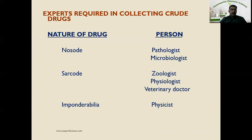For Nosodes — drugs prepared from diseased products or secretions — a pathologist or microbiologist is required for proper identification. For Sarcodes, a zoologist, physiologist, or veterinary doctor should be present at collection and identification. For Imponderabilia — drugs prepared from energy sources, natural or synthetic — a physicist should be present for proper identification.